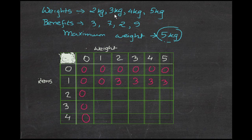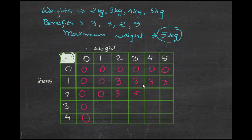For the second item, the thief can take the first and second item together. For 1 kg it's again zero; for 2 kg it will be 3. For 3 kg, the second item weighs 3 kg so the benefit is 7. According to the algorithm, we always place the maximum — so if 7 were less than 3 we'd put 3, but since 7 is greater, we put 7.